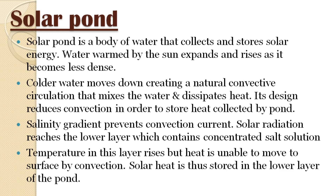A salinity gradient prevents convection. When there is a concentrated salt solution, solar radiation is able to reach the lower layer. This lower layer raises in temperature, but the heat cannot escape to the surface because convection is suppressed. The solar radiation reaches and is stored in the lower layer.